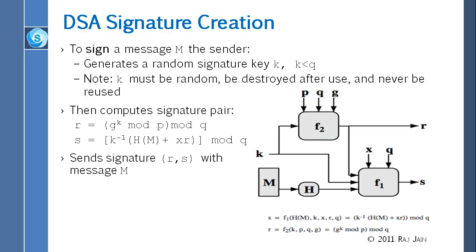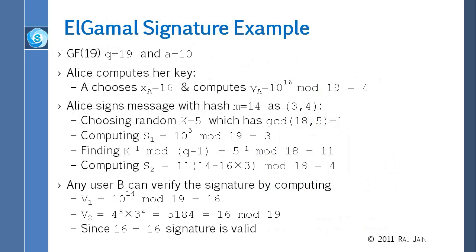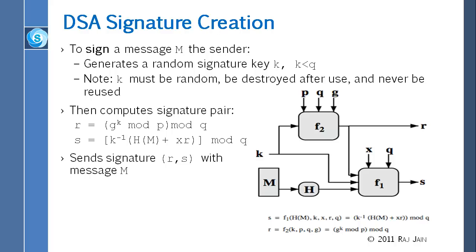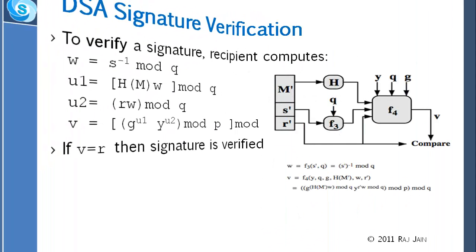So in that sense, this is more similar to ElGamal than Schnorr. In ElGamal we did K inverse times H(M) plus XR. And so this is exactly that if you go back to ElGamal. K inverse, M minus XS1. This is similar to that, M minus XS1. Here we do hash of M plus XR. So you send those two things, and when you want to verify, the mathematics works out that you calculate V and R, and if V is equal to R, then the signature is verified.